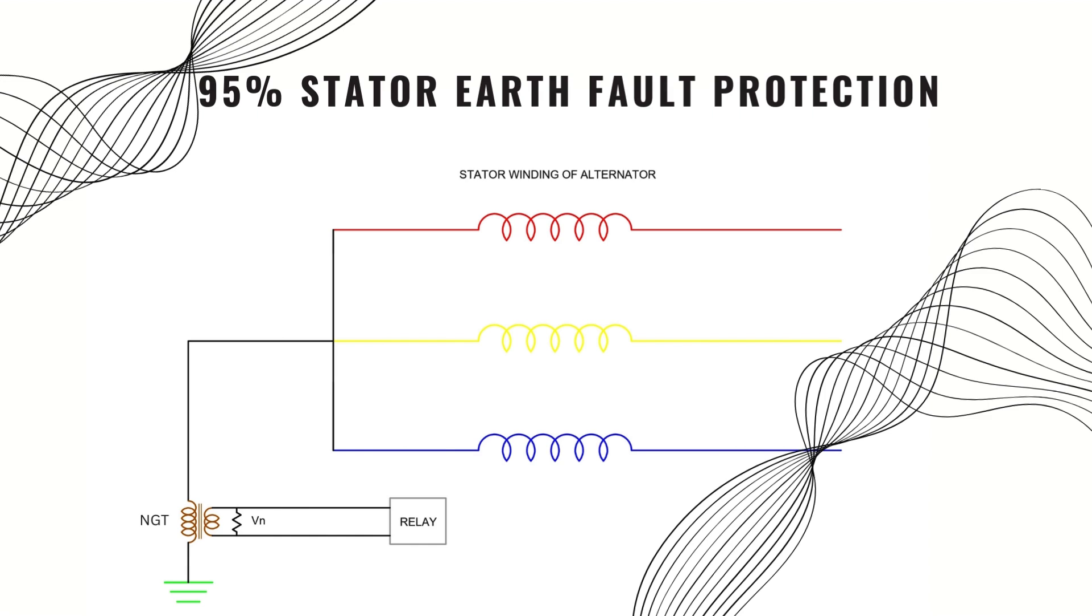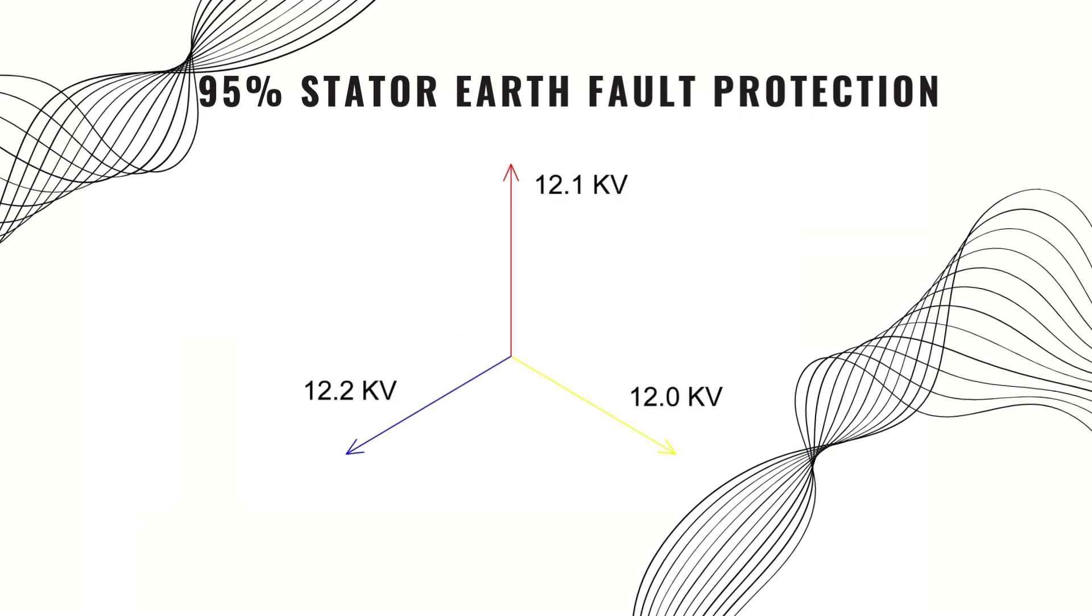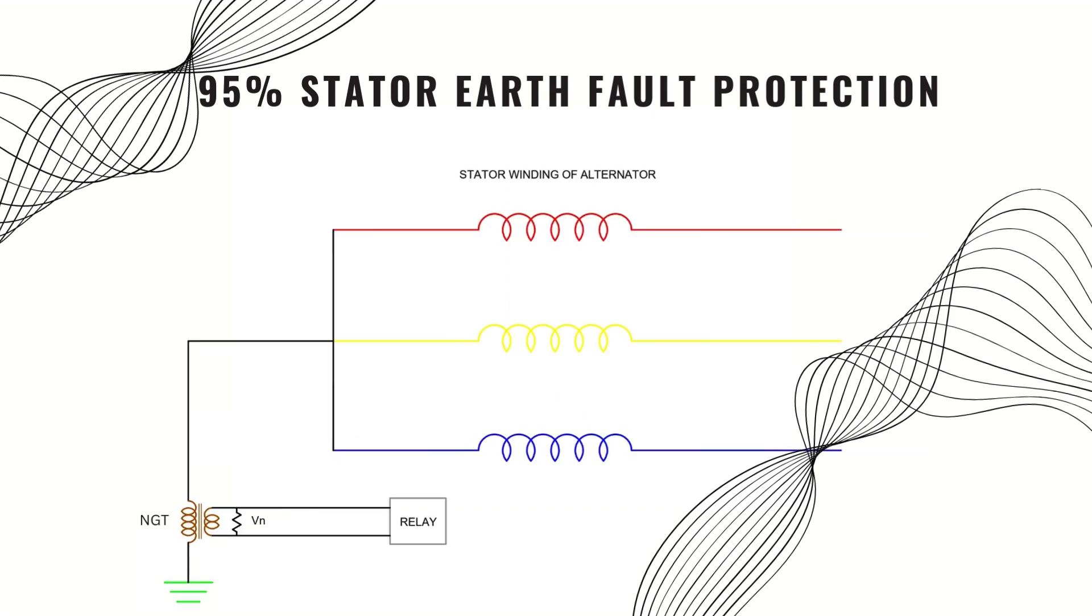In normal running conditions, the voltage across all three terminals is almost the same, but there must be a small difference. This difference is reflected in the neutral terminal. The NGT steps down this voltage. The voltage across the secondary terminal VN becomes almost 0 to 1 volts. This voltage is much less than the predetermined value, so the relay will not trip the generator.